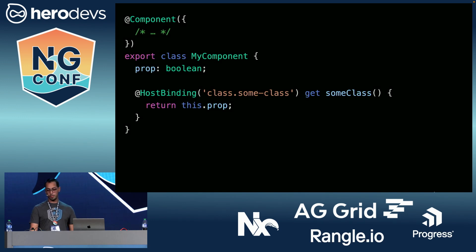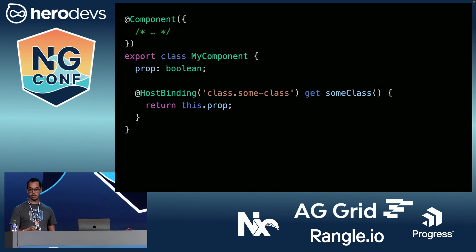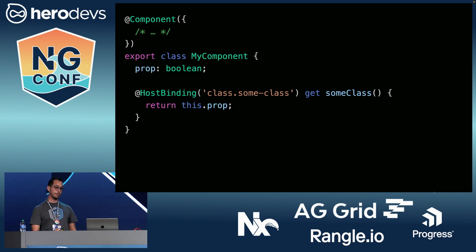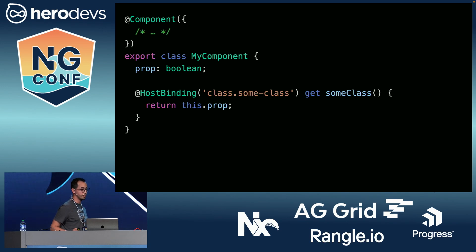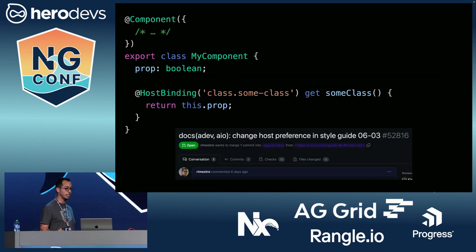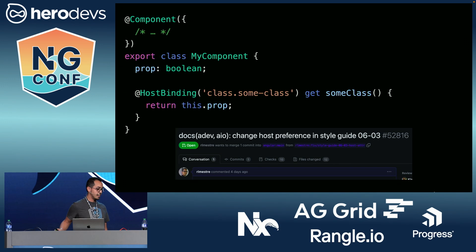You might be familiar with the HostBinding decorator, which is used more or less in the same context, often paired with getters or static strings. But as we've seen, the general theme is that Angular is moving away from using property and method decorators in classes. So I suggest sticking to the host property. Maybe eventually we can get the preference changed in the style guide and get that ESLint rule flipped.